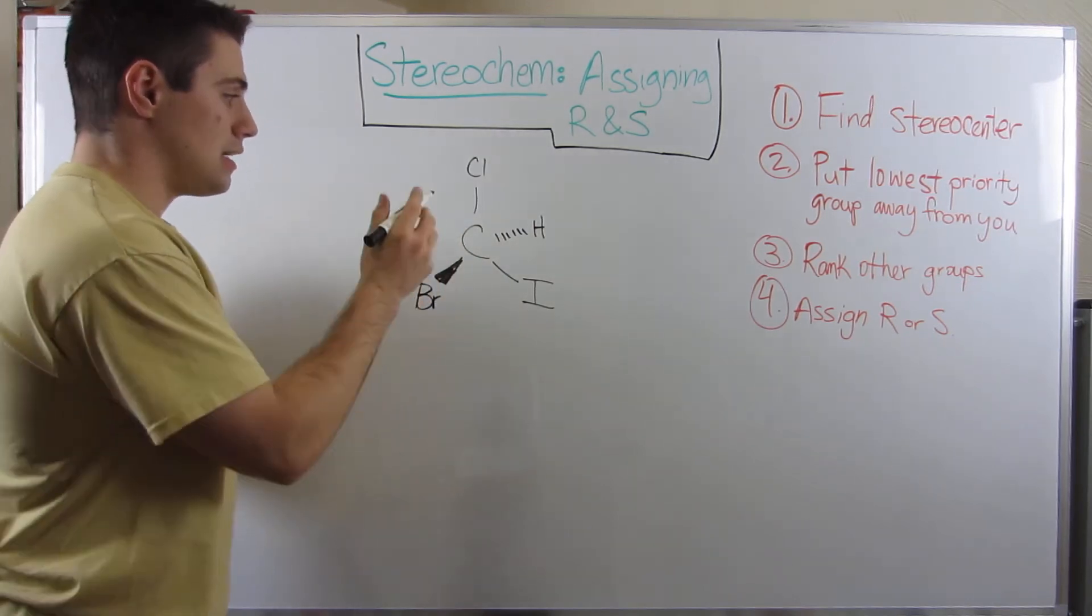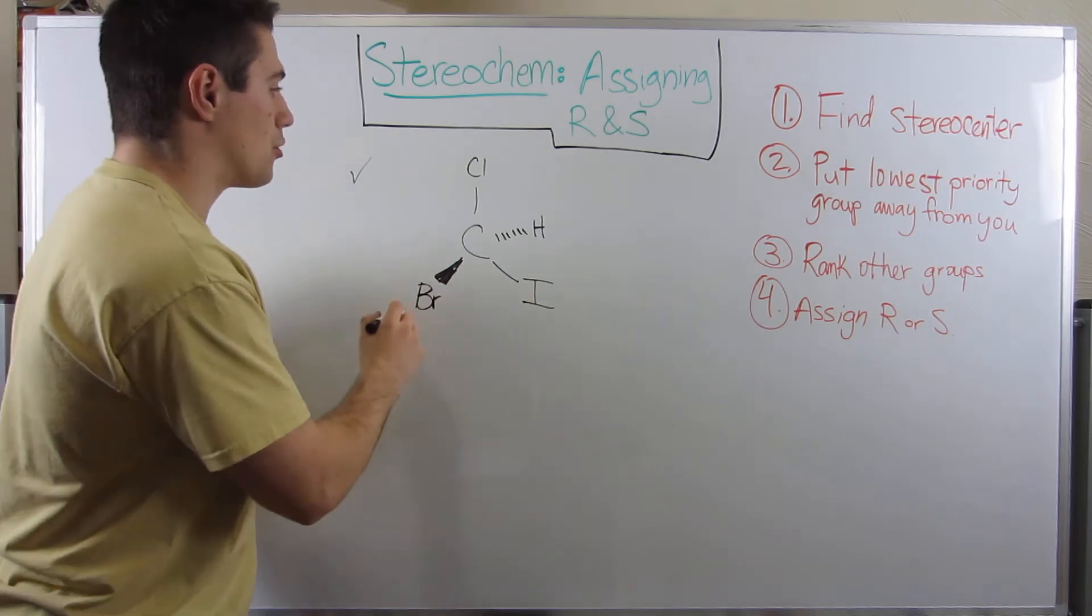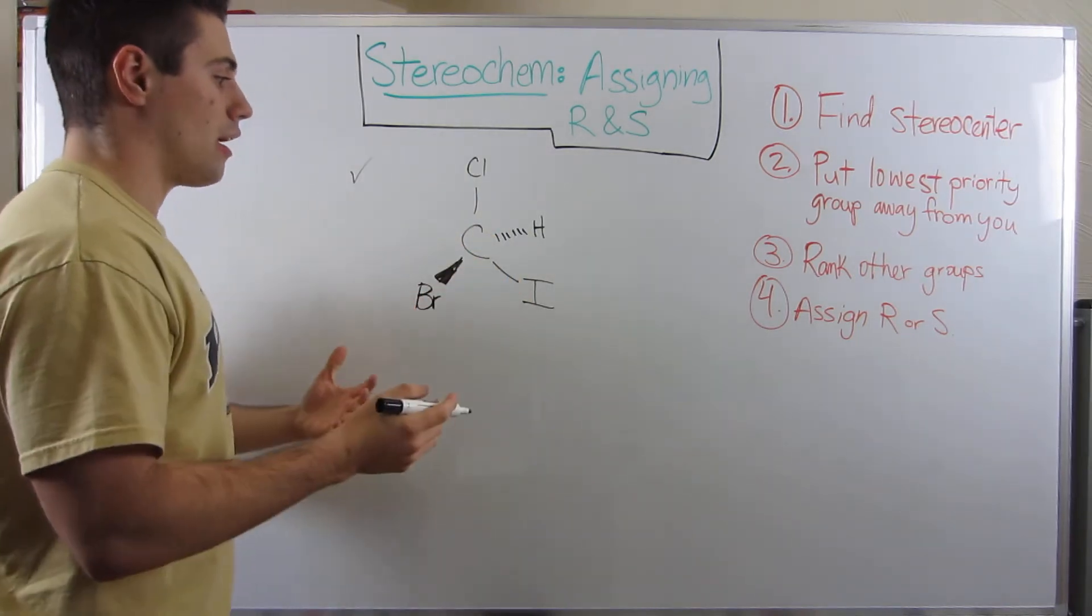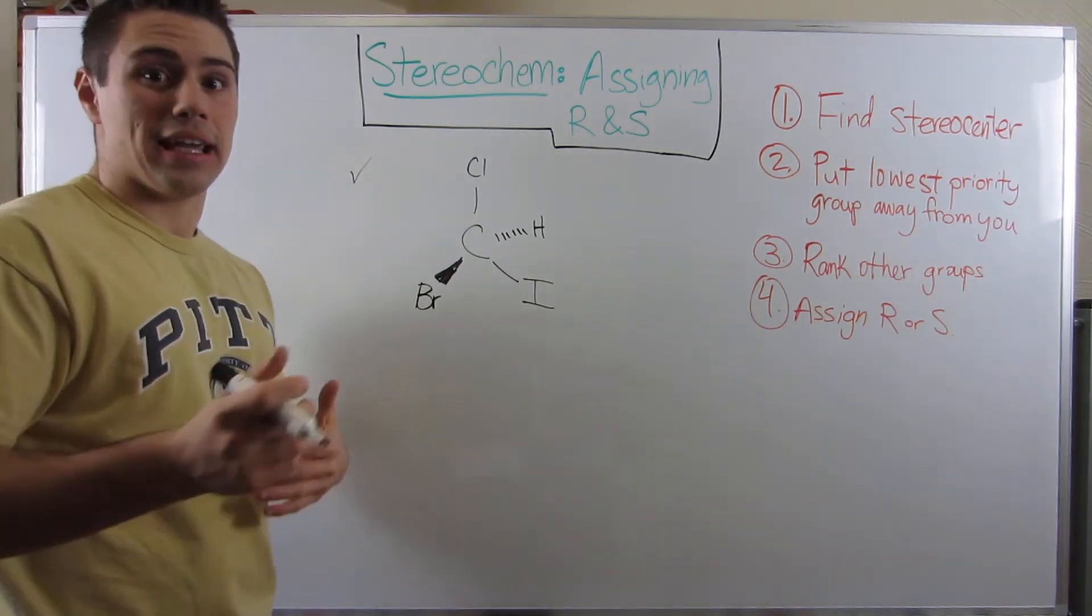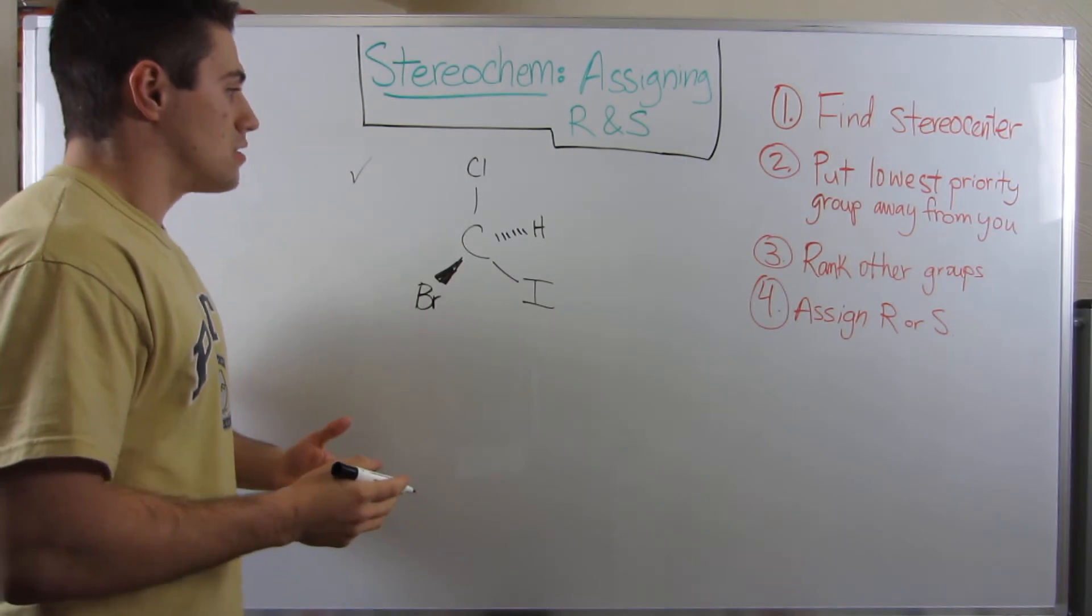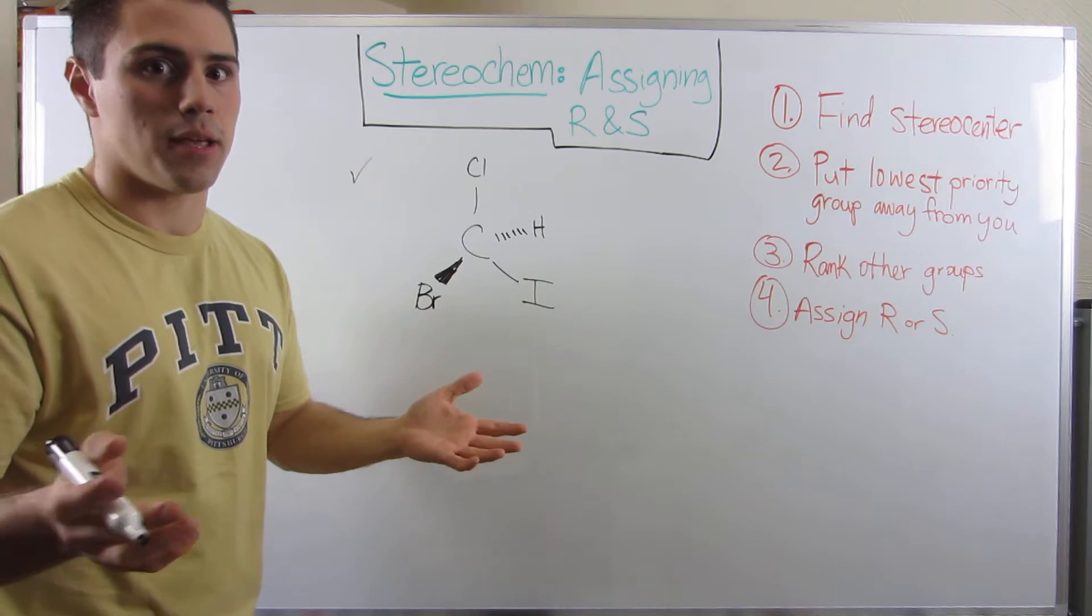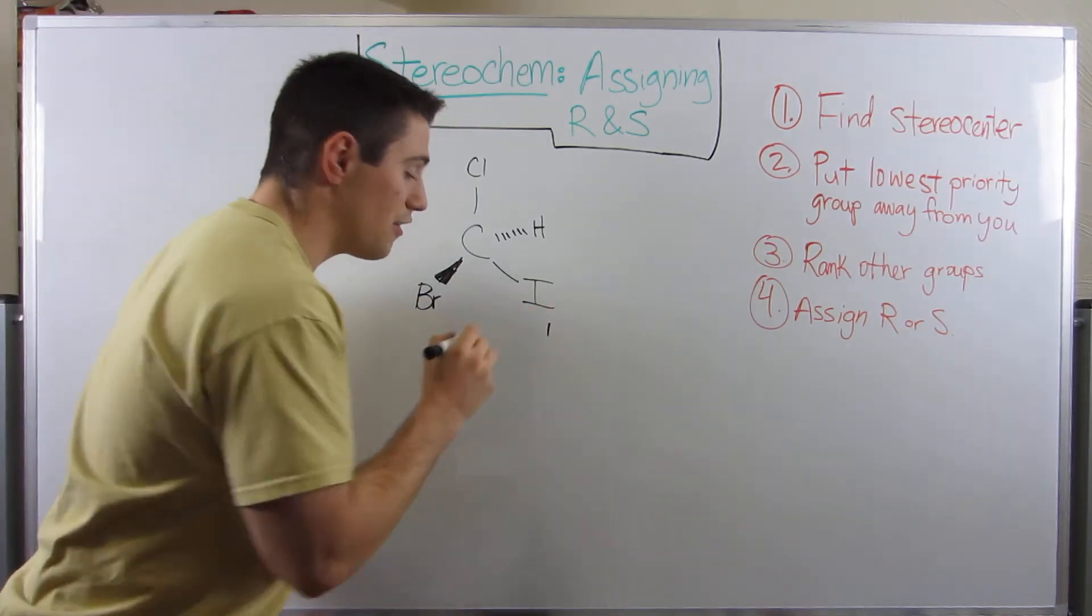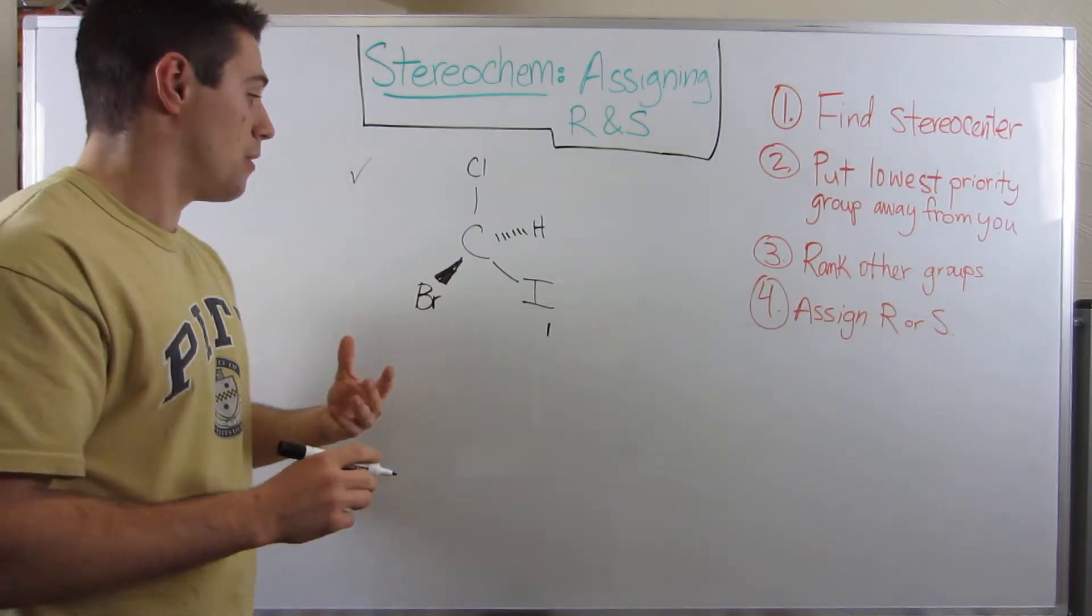Okay. So clearly this carbon is in fact the stereocenter because we're attached to an iodine, a bromine, a chlorine, and a hydrogen. So those are four different things. All right. So now we need to kind of see who's putting on the pounds, who's the heaviest. So we can see that iodine is clearly, if we had a periodic table, I just kind of know this off the top of my head, iodine is the highest. So I'm going to give him a one. So he's the highest priority, first priority group.